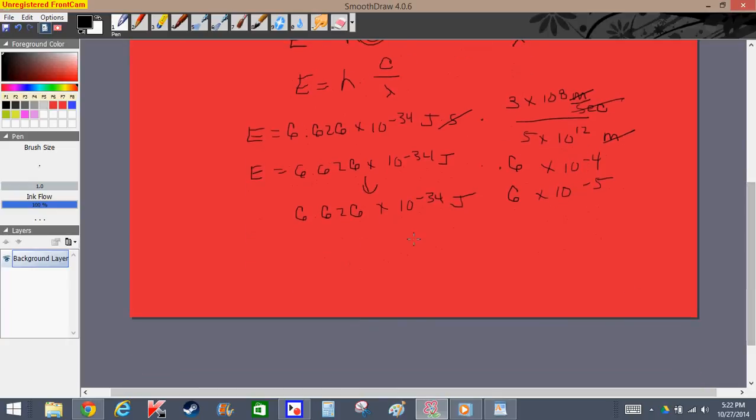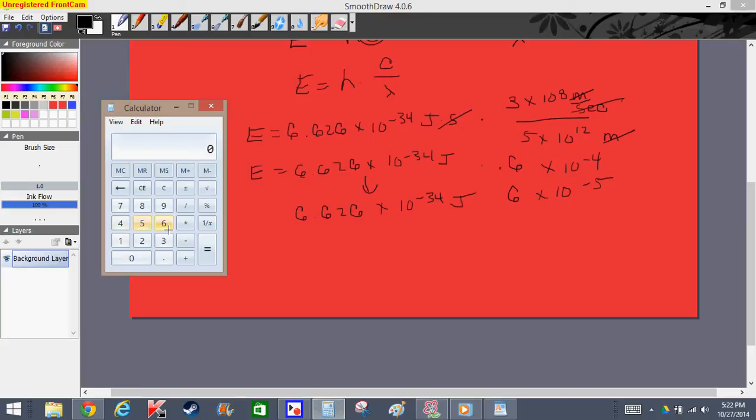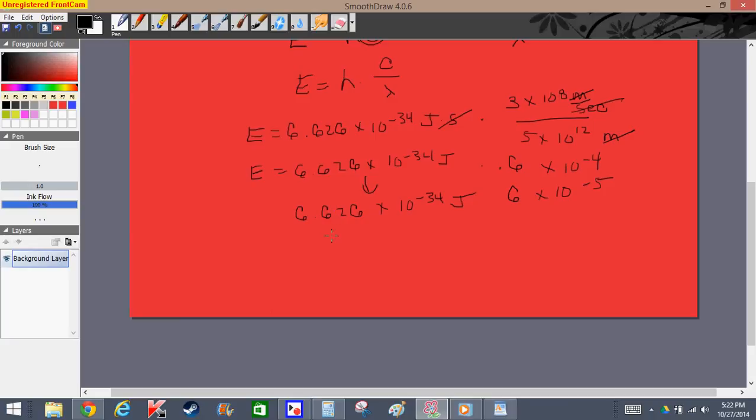We multiply this out. If I just get out my calculator here, 6.626 times 6 equals 39.756. Now we have exponents in terms of powers of 10, so when we're multiplying these two expressions, we simply add the exponents. Negative 34 plus negative 5 is 10 to the negative 39th.